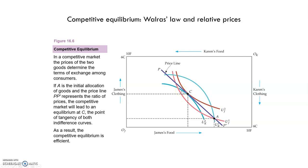However, not all prices are consistent with an equilibrium. For example, if the price of food is 1 and the price of clothing is 3, food must be exchanged for clothing on a 3-to-1 basis. But then each James would be unwilling to trade any food to get additional clothing, because his marginal rate of substitution of clothing for food was 0.5. Each Karen, on the other hand, would be happy to sell clothing to get more food, but she has no one to trade with. Therefore, the market would be in disequilibrium, because the quantity demanded is not equal to the quantity supplied.